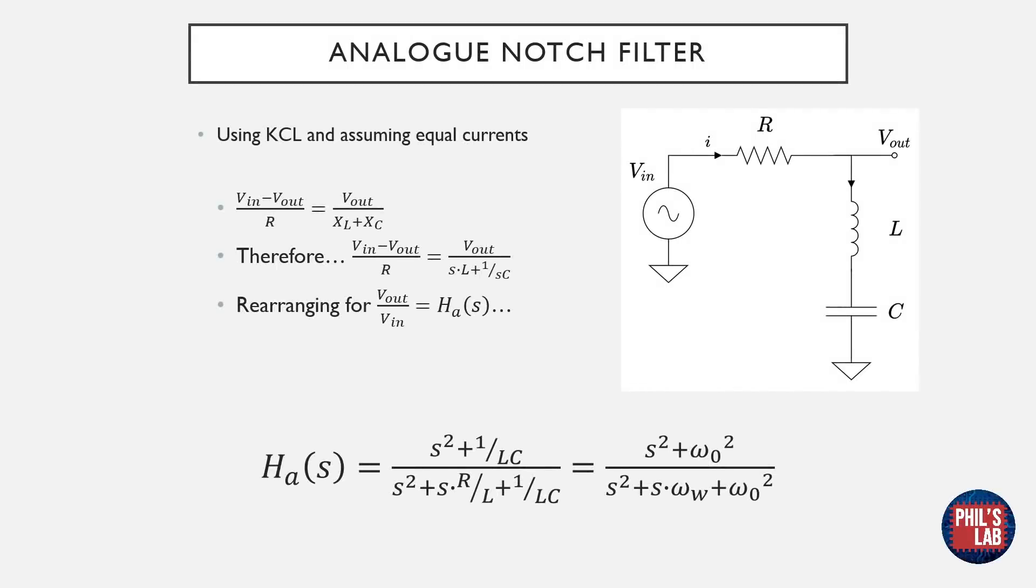Once we have an intuitive understanding of the behaviour of this filter, we can approach it mathematically. As usual, we will use Kirchhoff's current law, KCL for short, and assume equal current flow through the resistor, as well as through the inductor and capacitor. Setting up our equation, we get (Vin - Vout)/R is equal to Vout over the series reactance of the inductor and capacitor. We can substitute for the reactances, then rearrange for the filter gain, which is Vout/Vin, to give the transfer function of this filter.